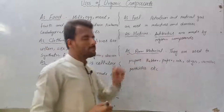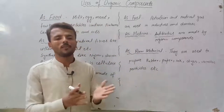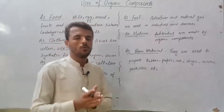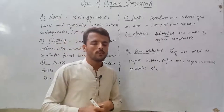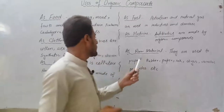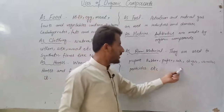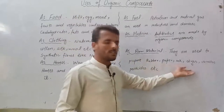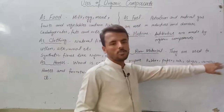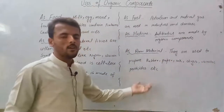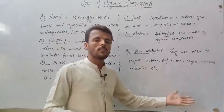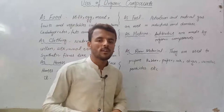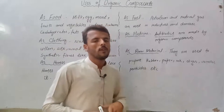The 6th use is as raw materials. Raw materials are what we start with in a chemical reaction at the beginning of a process. We can use organic compounds as raw materials to produce rubber, paper, ink, dyes, varnishes, and pesticides. Pesticides include fertilizers, insecticides, and weed-killing herbicides. These are all made from organic compounds.